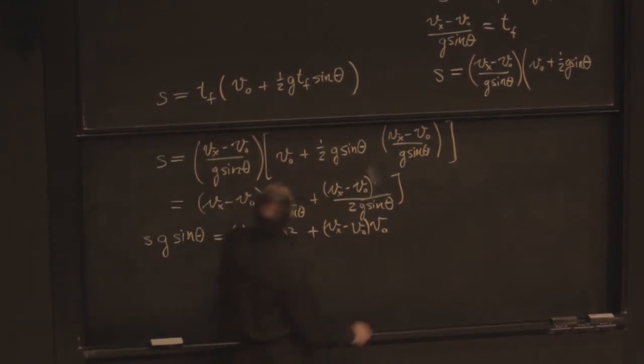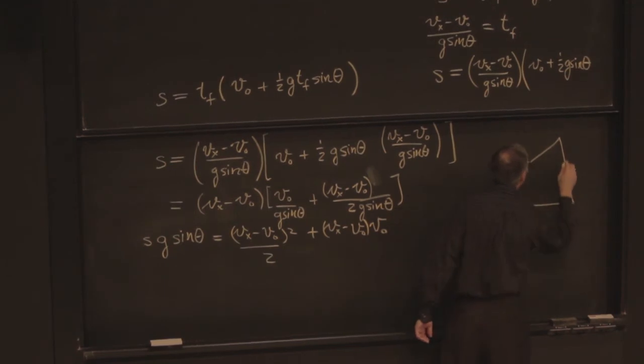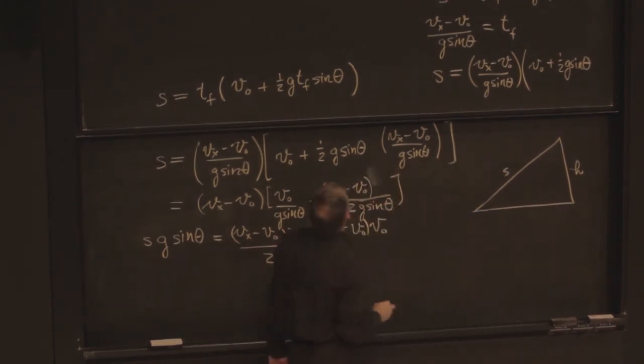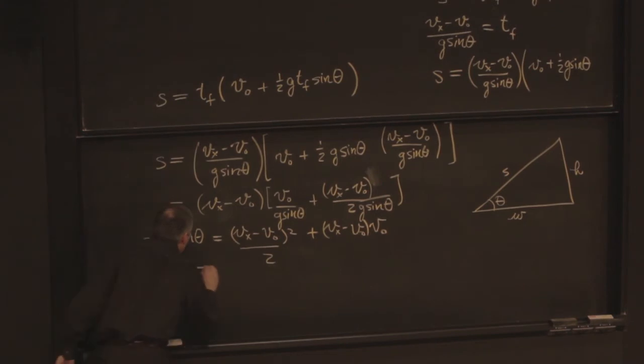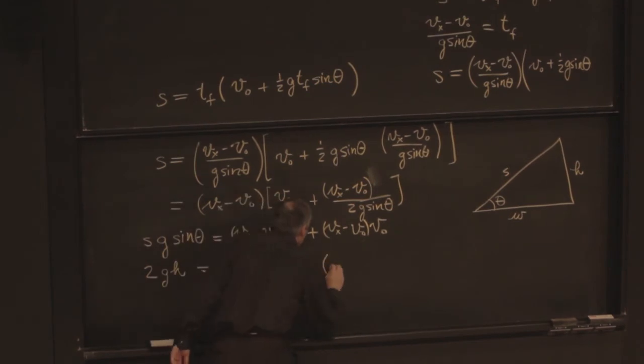Time for some geometry. So in my triangle, that's a pretty lousy right triangle, but never you mind. And that's h, this is s, and this is w, and this is theta. So s times the sine of theta is what? That's h. So this is gh.